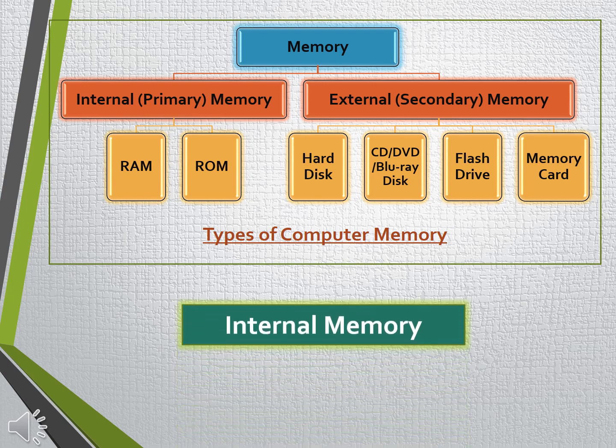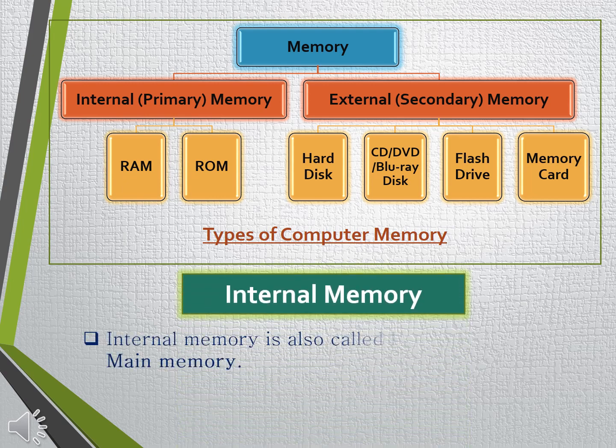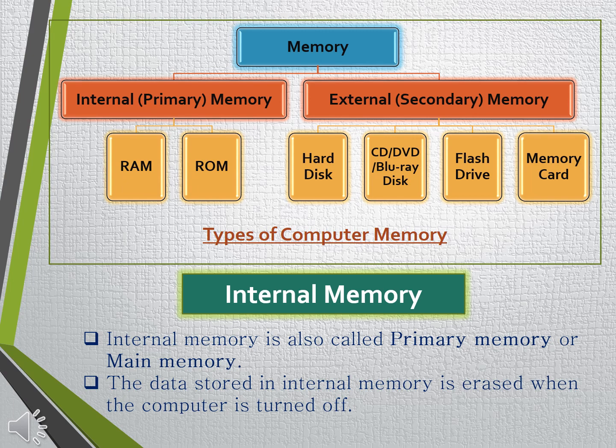What is internal memory? Internal memory is also called primary memory or main memory. This memory unit is already fixed inside the computer system. The data stored in internal memory is erased when the computer is turned off. Therefore, it is always easier to access data or programs from internal memory as it is the fastest of all forms of computer data storage. We will now study two types of primary memory: RAM and ROM.